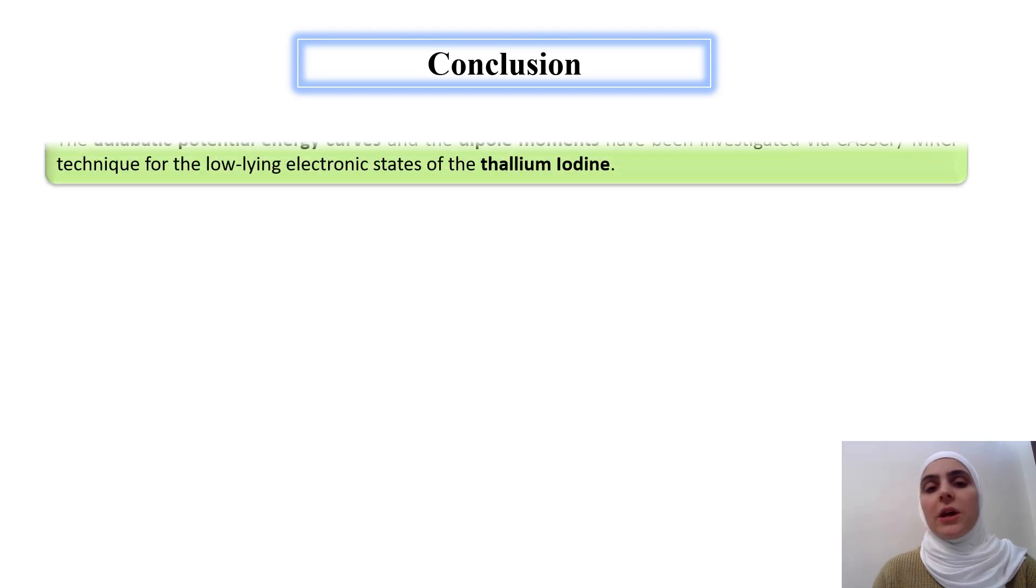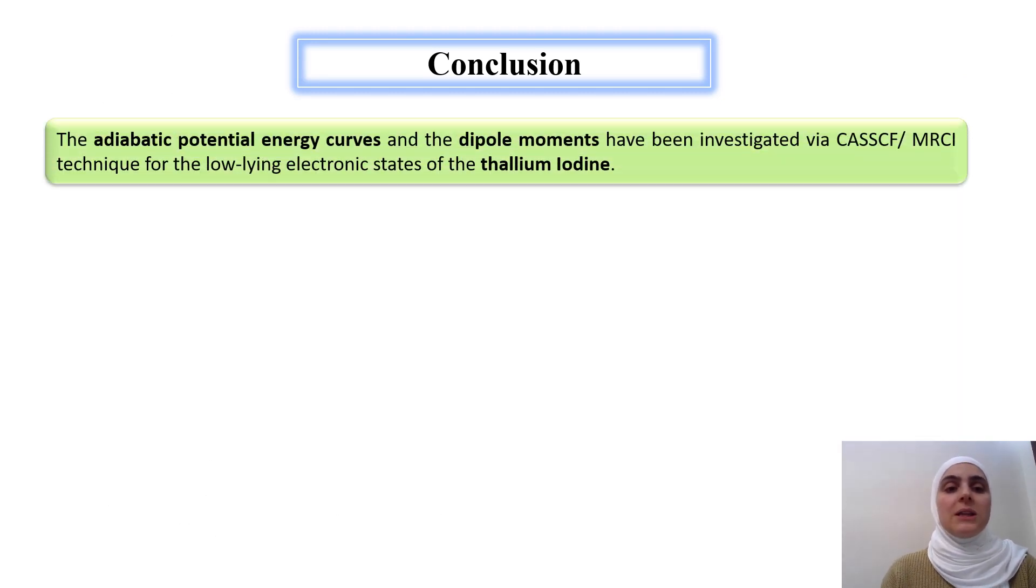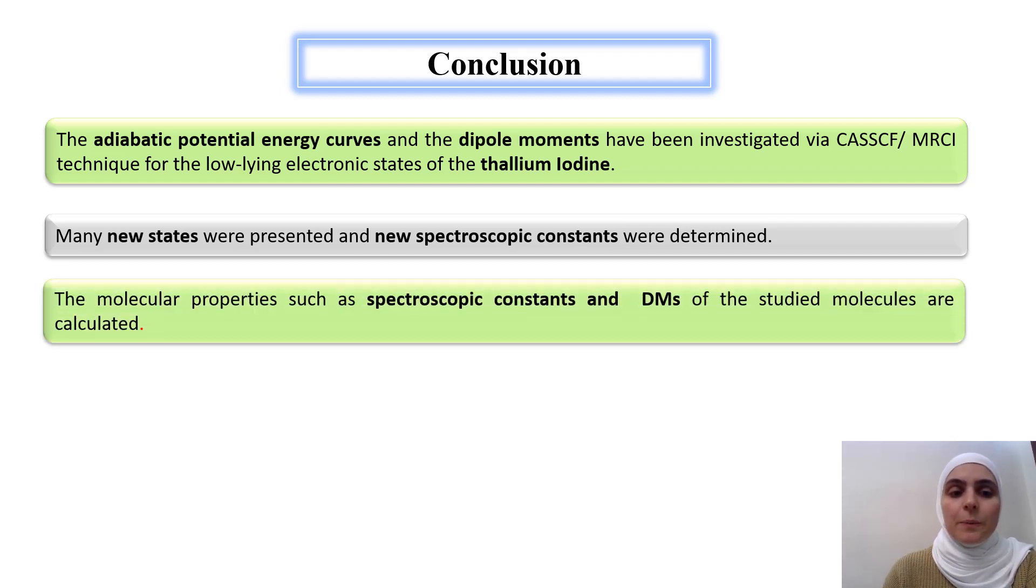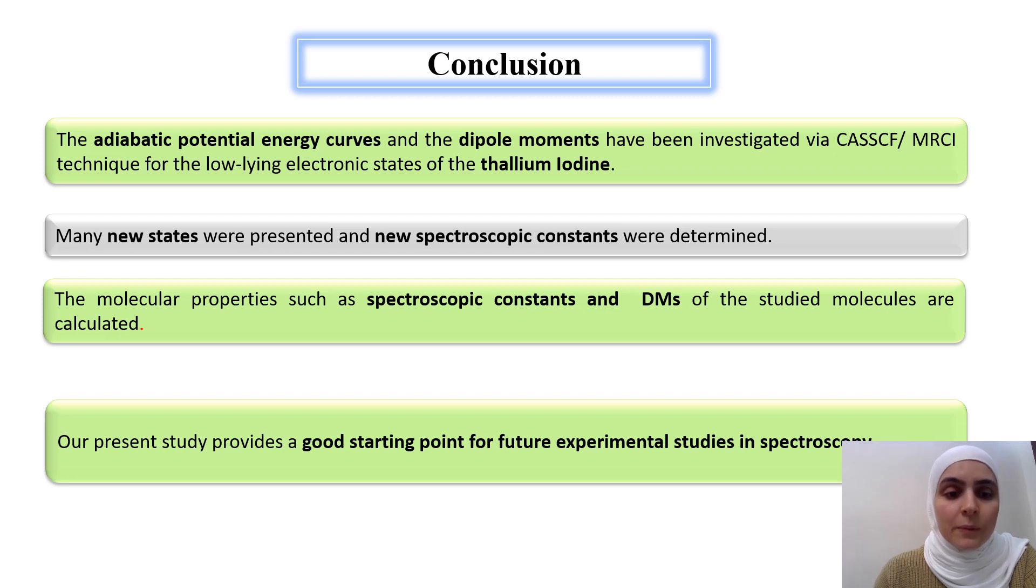Finally, we come to our conclusion about our studied molecule. The adiabatic potential energy curves and the dipole moments have been investigated via complete active self-consistent field and multi-reference configuration interaction with Davidson correction technique for the low-lying electronic states of thallium iodine. Many new states were presented and new spectroscopic constants were determined. The molecular properties such as spectroscopic constants and dipole moments of the studied molecules are calculated. At the end, our present study provides a good starting point for future experimental studies in spectroscopy.